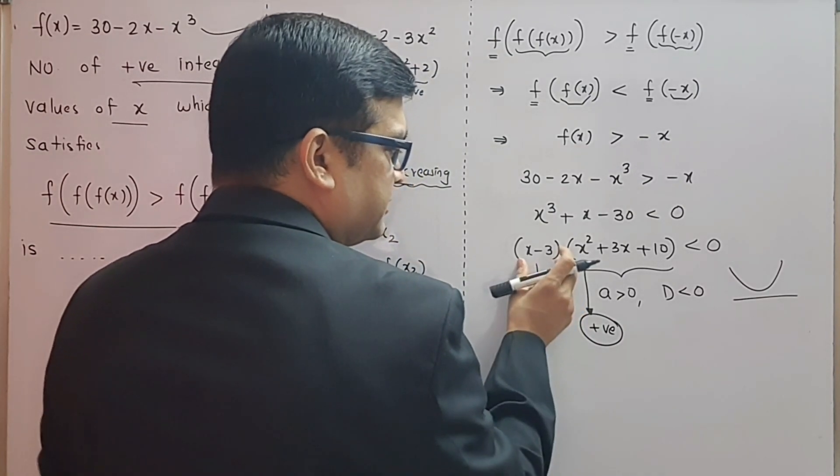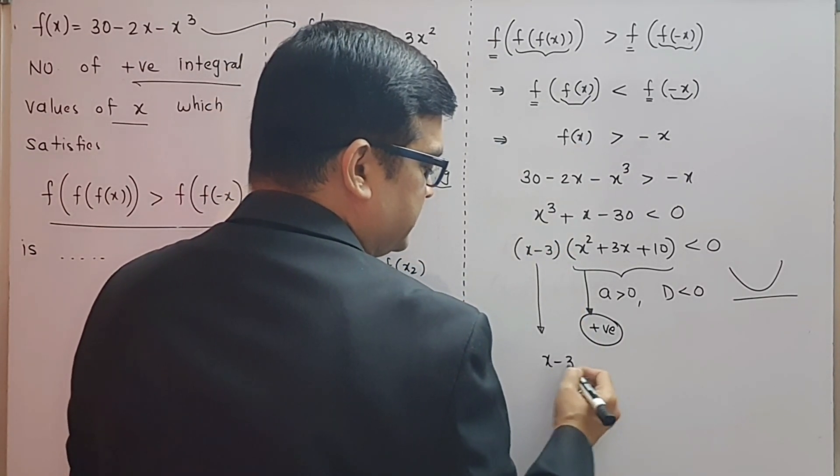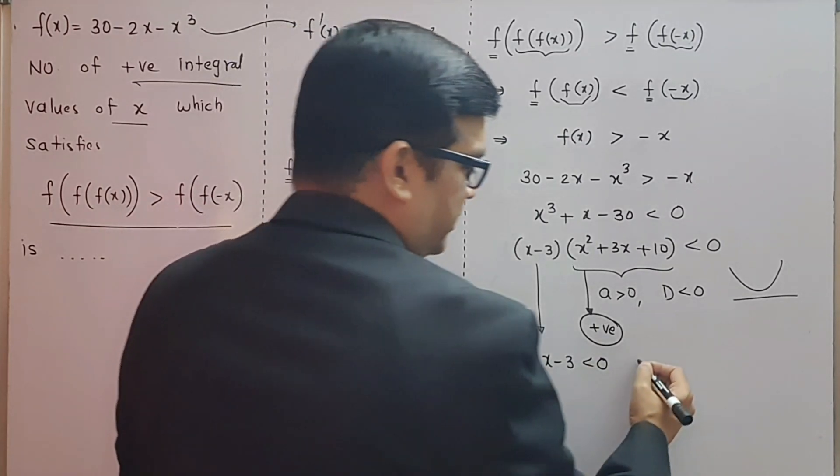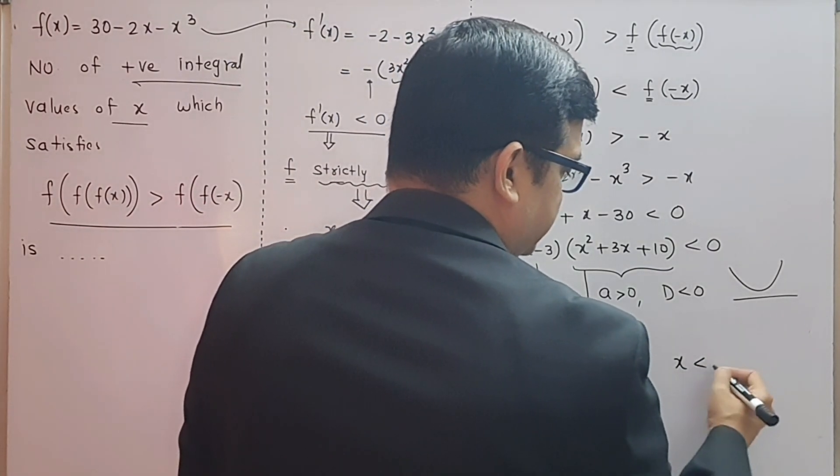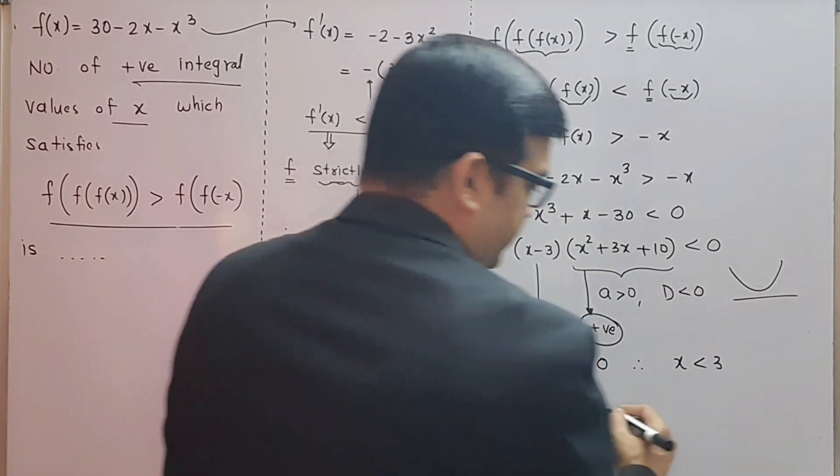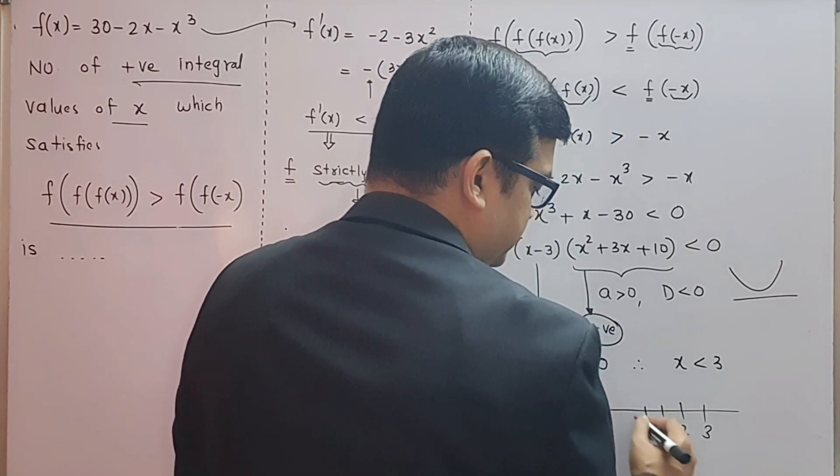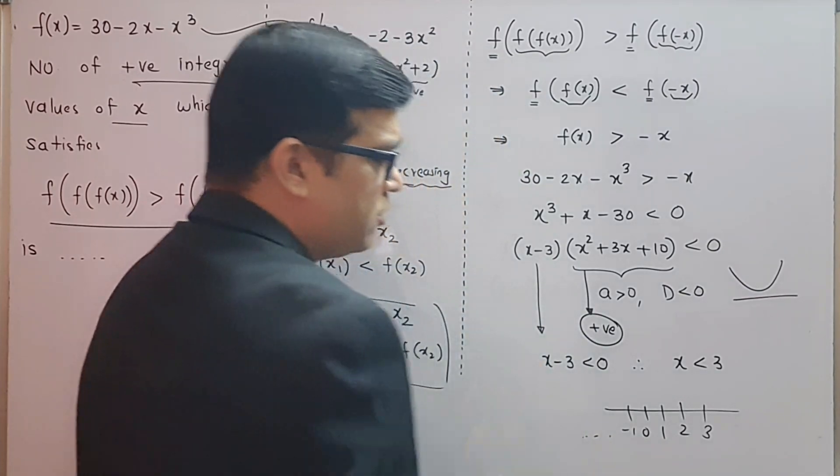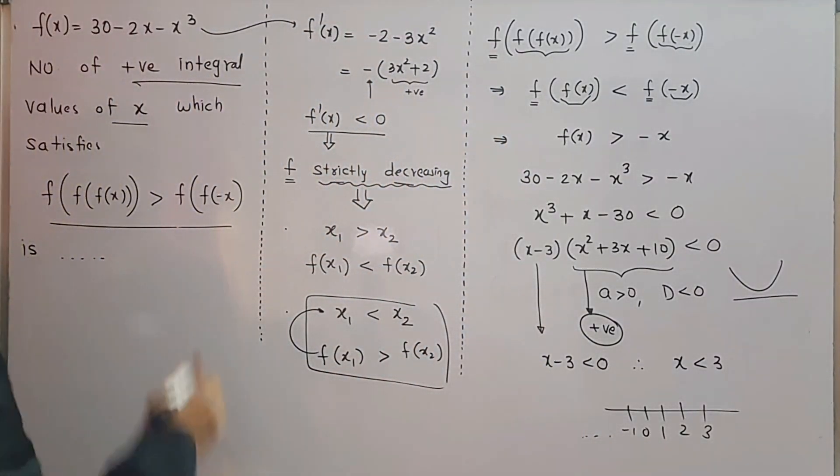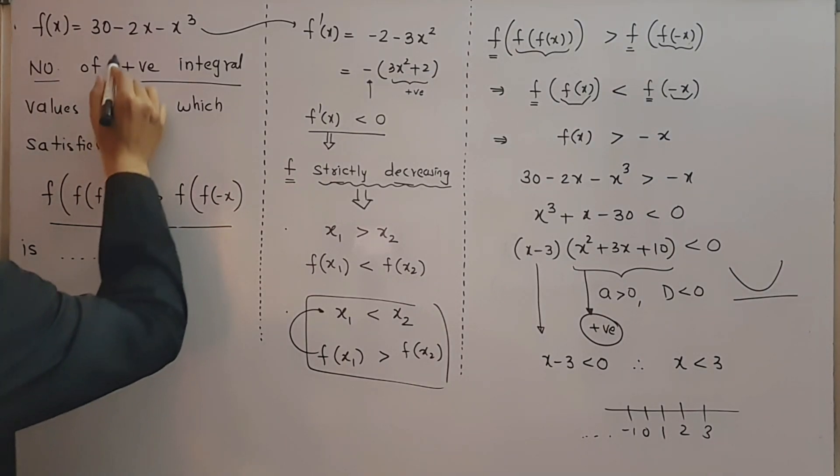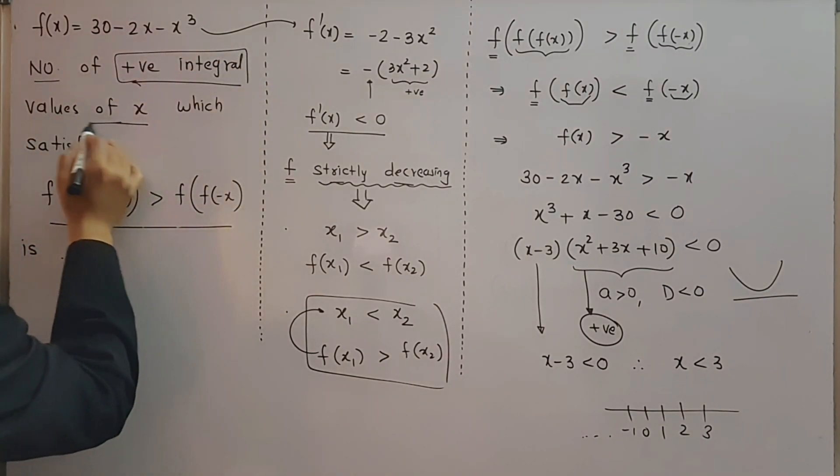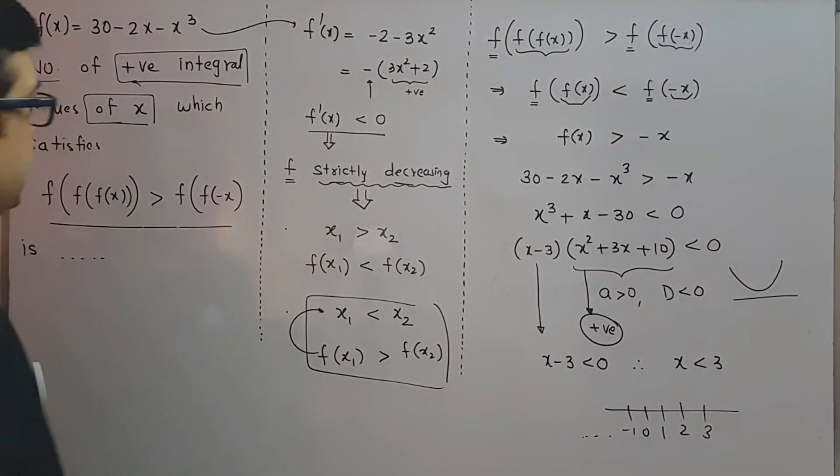this entire quadratic expression is positive. If this entire quadratic expression is positive, then there is no other option but to make this (x - 3) less than zero, and therefore we conclude x is less than 3. Now when I say x is less than 3, it can be 2, 1, 0, -1, and so on.